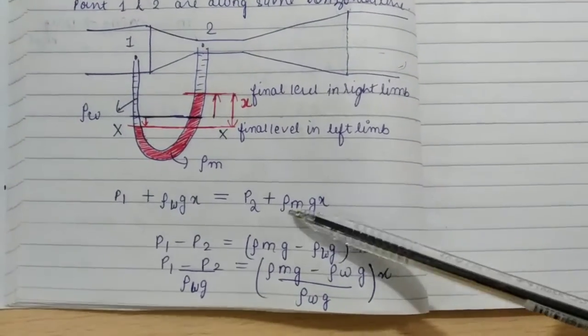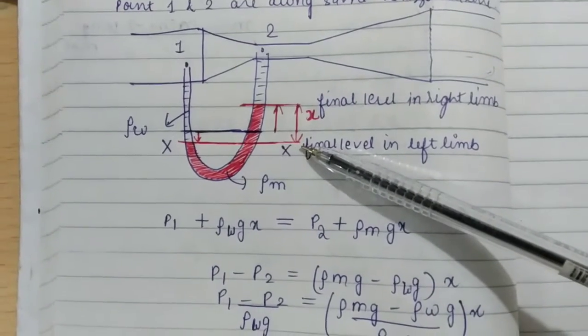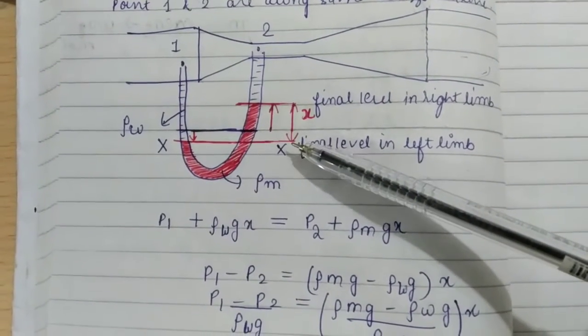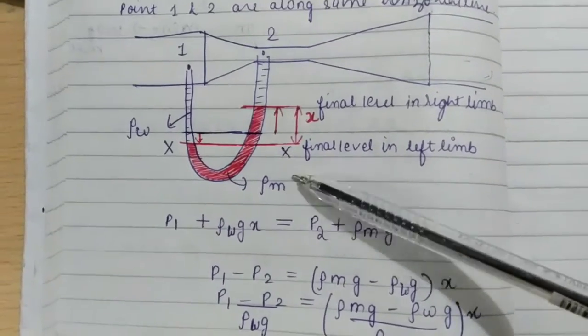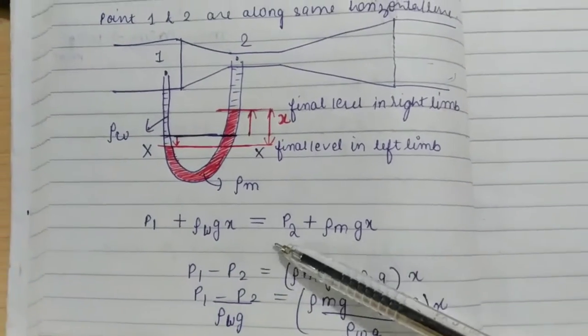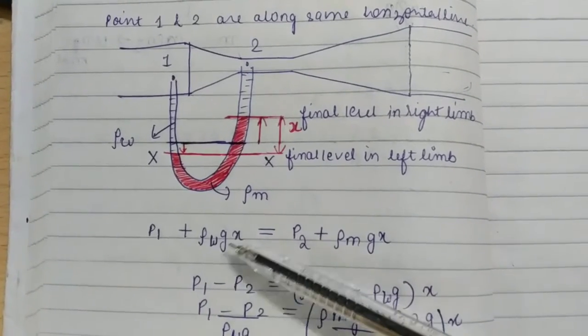Now as we can see that this is the final level of the pressure in these two limbs and at this level we can just equate the pressure here. If you remember in unit 2 we have done pressure and its measurements. I will just equate the pressure.